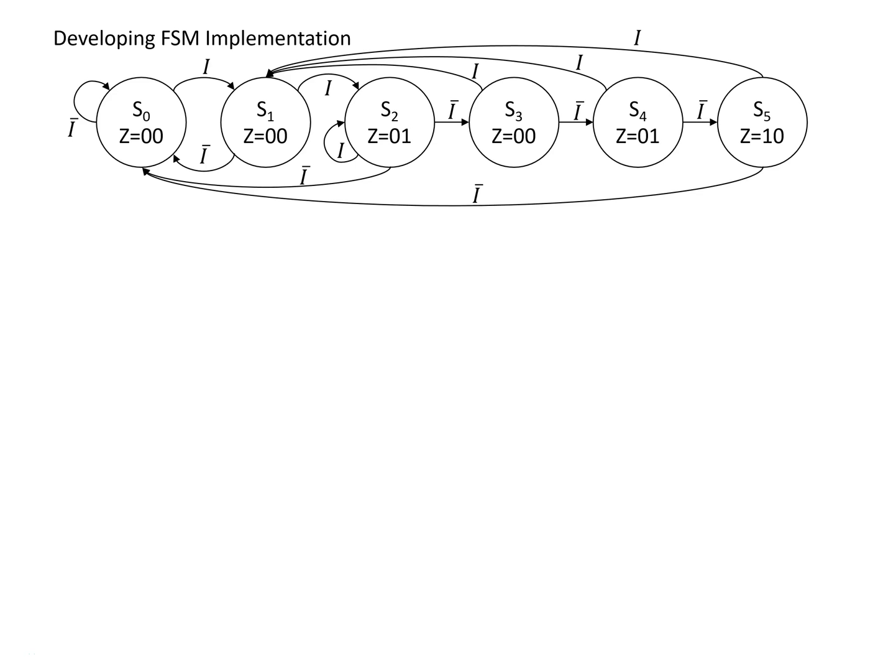In this video, we're going to look at how to take a state transition diagram for a finite state machine and turn it into some digital logic that will implement the finite state machine. We're assuming that we're already given the state transition diagram. In this particular case, we've got an FSM that has six states, labeled S0 through S5. This FSM has one input, I, and it has two outputs, Z1 and Z0.